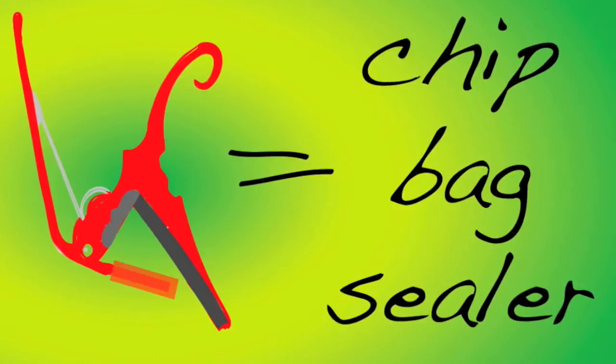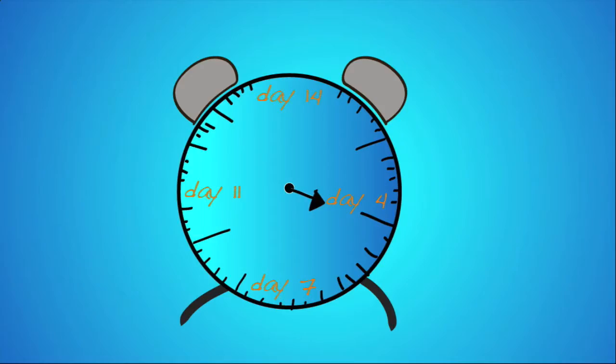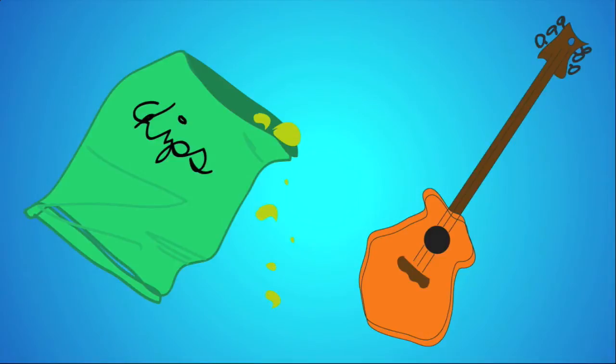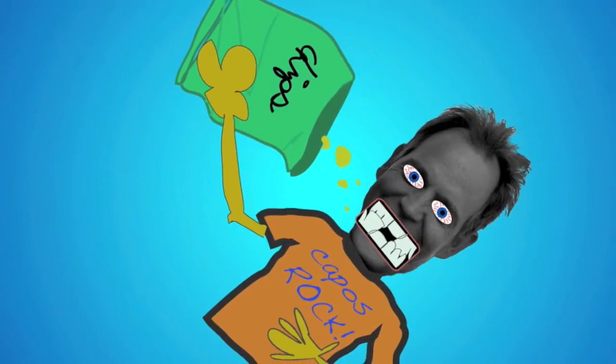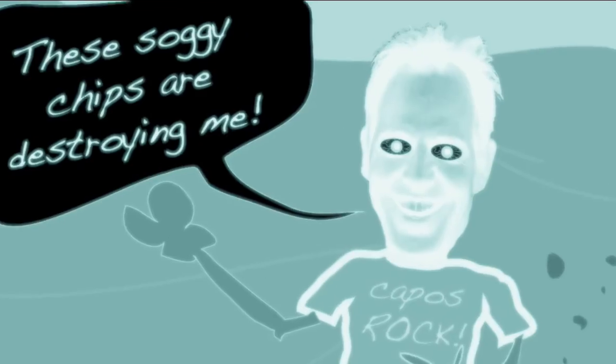Survival technique number two, a chip bag sealer. After four days of your two-week camping trip all you have left is a half-eaten bag of chips and your guitar. This bag of edible goodness is the key to your survival but if the chips don't stay fresh your stomach could revolt resulting in your camping trip having a fatal outcome.